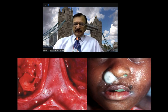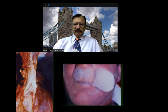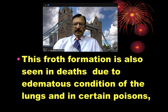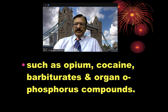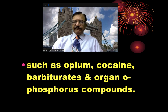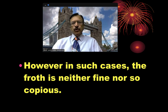This pictorial diagram shows the fine froth on the left side, also showing it in the respiratory passages. This is another picture showing the fine froth. This froth formation is also seen in some other deaths, such as edematous conditions of the lungs and in certain poisons such as opium, cocaine, barbiturates and organophosphorus compounds. However, in such cases the froth is neither fine nor so copious.